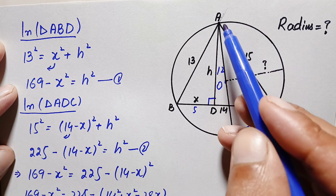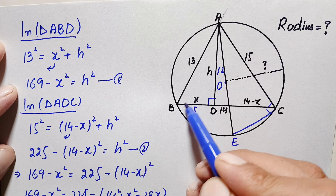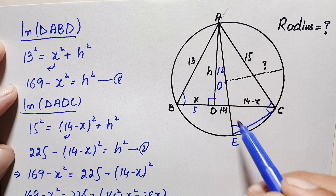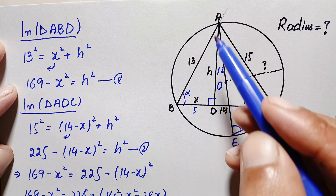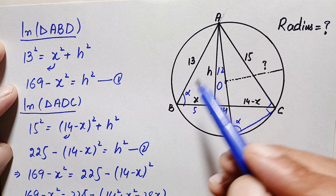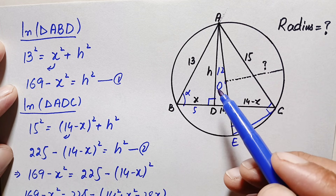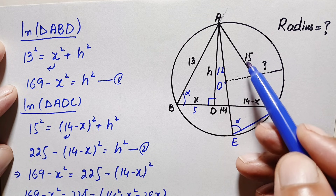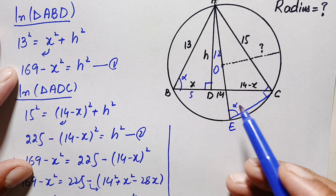Looking at both triangles ABD and AEC, these two angles at corresponding points are right angles. If we extend the side of triangle ABD, these two triangles share the same common arc. When two triangles subtend the same arc, the angles subtended are equal. The angle at point B and the angle at point E are both subtended by the same arc, so they are equal — let us call this angle alpha. By the angle-angle property, triangles ABD and AEC are similar triangles.